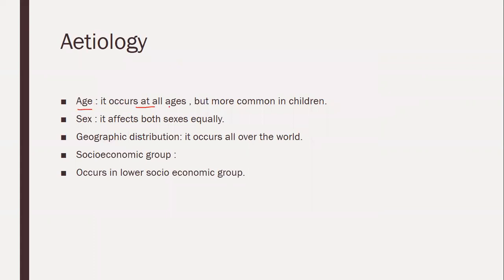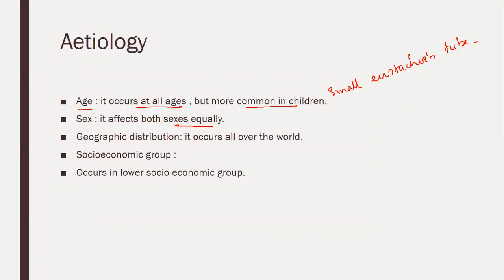Etiology: Age — it can occur at all ages but is more common in children, mainly due to the small Eustachian tube. In smaller children, there is a higher chance of getting respiratory infections. As the Eustachian tube has a smaller size, infections can spread from the nasal cavity to the middle ear very fast. Sex affects both sexes equally. Geographic distribution — it occurs all over the world, not localized to any particular area. Socio-economic group — it occurs more in the lower socio-economic group as patients have lower immunity.